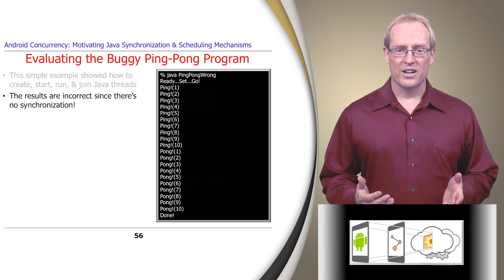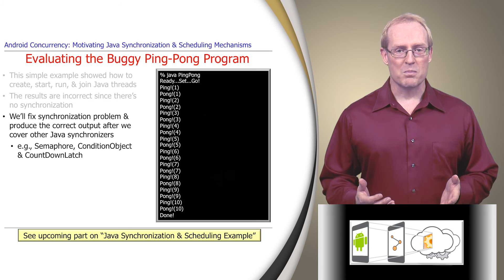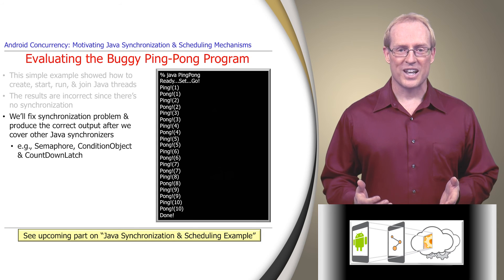In particular, the ping thread prints all of its output and then exits before the pong thread even has a chance to run. We'll fix this problem later in this module, after we cover Java semaphores and countdown latches, so that the ping and pong threads will alternate printing their output to the console, as shown on this slide.